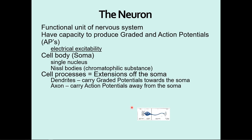Axons can be extremely long. Neurons are very small cells — we can't see them without a microscope — but from the end of the dendrites to the end of the axon we could be looking at microns, which are thousandths of a millimeter, or it could be three or four feet. For example, the cell body could be in your lumbar region and the end of the axon could be down in your big toe. So neurons can be extremely long, yet still invisible to the naked eye — like a very long strand of spider web.